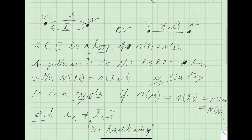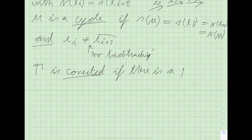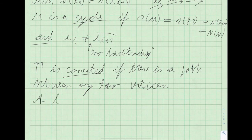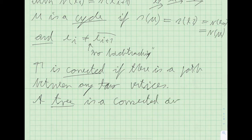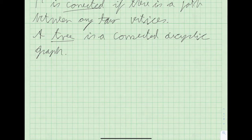No backtracking is needed to make our definitions work out. The graph gamma is connected if there is a path between any two vertices. Now we can define what we mean by a tree: a tree is a connected acyclic graph — a graph that is connected and has no cycles without backtracking.